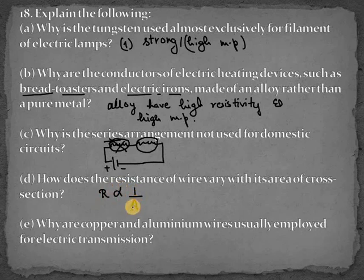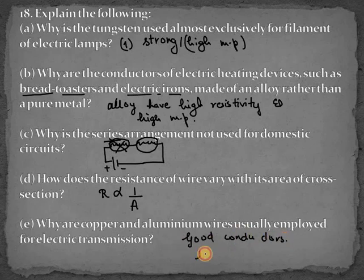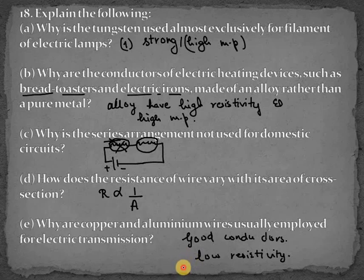Next is why are copper and aluminium wires usually employed for electric transmission? Now because they are good conductors and they have low resistivity. And yes, one more reason is that they are ductile. Ductile means they can be drawn into thin wires.